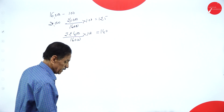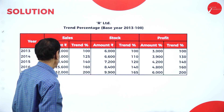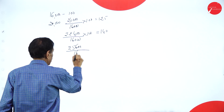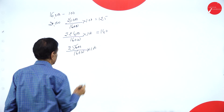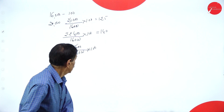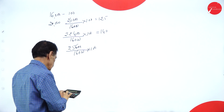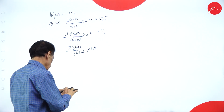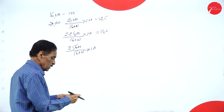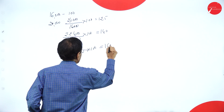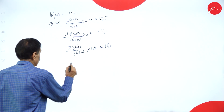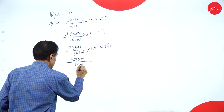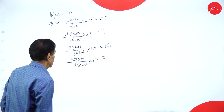Next, 25,600 divided by 16,000 into 100 equals 160. Last, 32,000 divided by 16,000 into 100 equals 200.